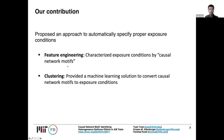To summarize our contribution, we propose an approach to automatically specify proper exposure conditions using a standard machine learning pipeline. First, we do feature engineering — we characterize each ego network by the causal network motif. Then we use an unsupervised learning algorithm, specifically a decision tree, to convert causal network motifs into specific exposure conditions. Each leaf of the decision tree corresponds to a unique exposure condition.